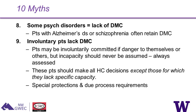Myth nine: involuntary patients lack capacity. Patients who are involuntarily committed are committed for danger to themselves or others — the rationale is based on safety, not to deny the expression of their choices. They should be able to make all healthcare decisions except those for which they lack specific capacity. This includes, in many circumstances, the right to refuse the very treatment for the underlying condition prompting admission, which is tricky. Because they are particularly vulnerable, there are state-by-state due processes and special protections for them.